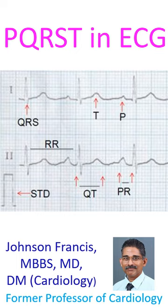1500 divided by the RR interval in millimeters gives the ventricular rate. PR interval is measured from the onset of the P wave to the onset of QRS, and the normal range is between 120 to 200 ms.